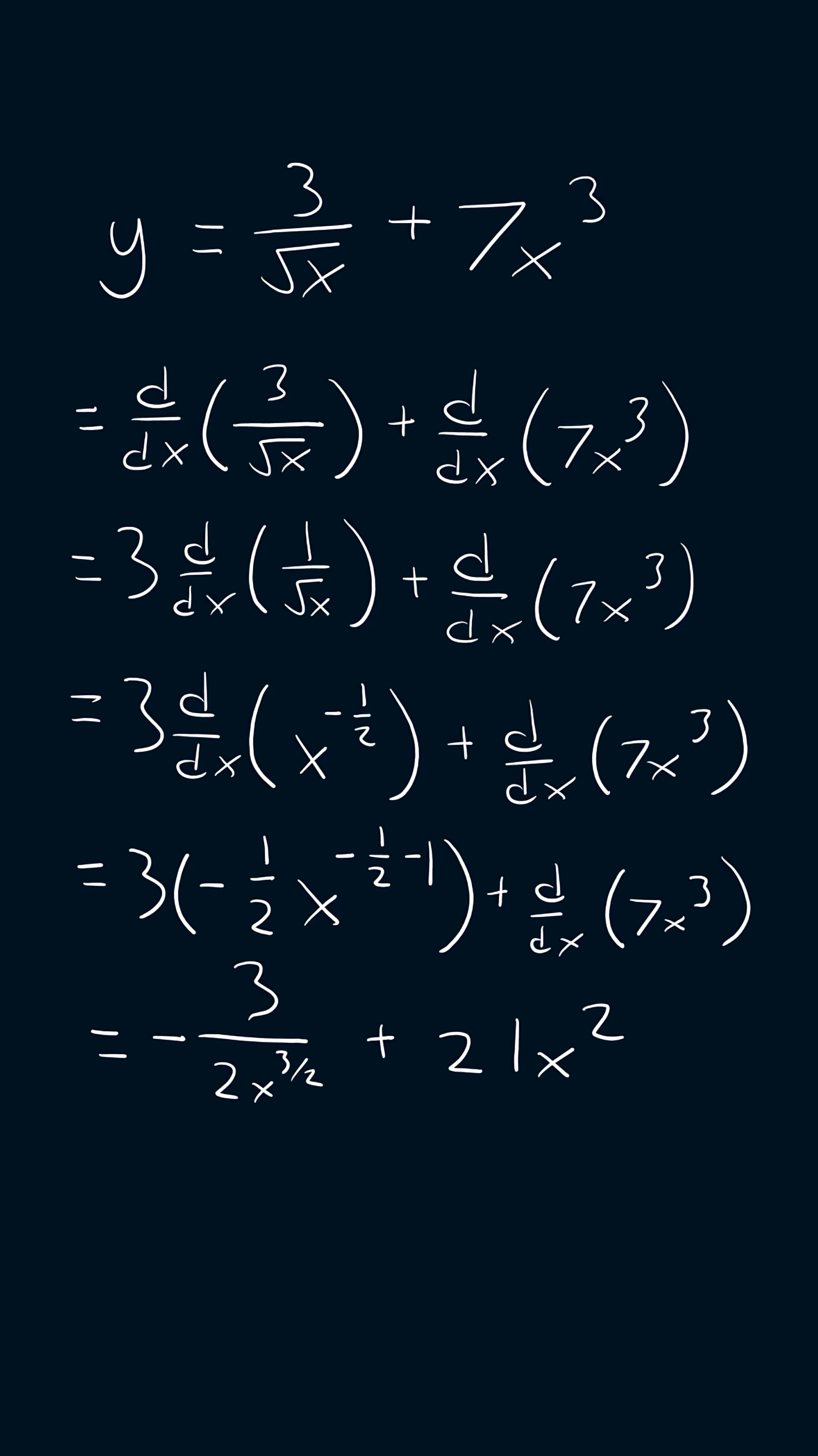This can now be simplified to negative 3 plus 42x to the power of 7 over 2 divided by 2x to the power of 3 over 2. And that is the answer.